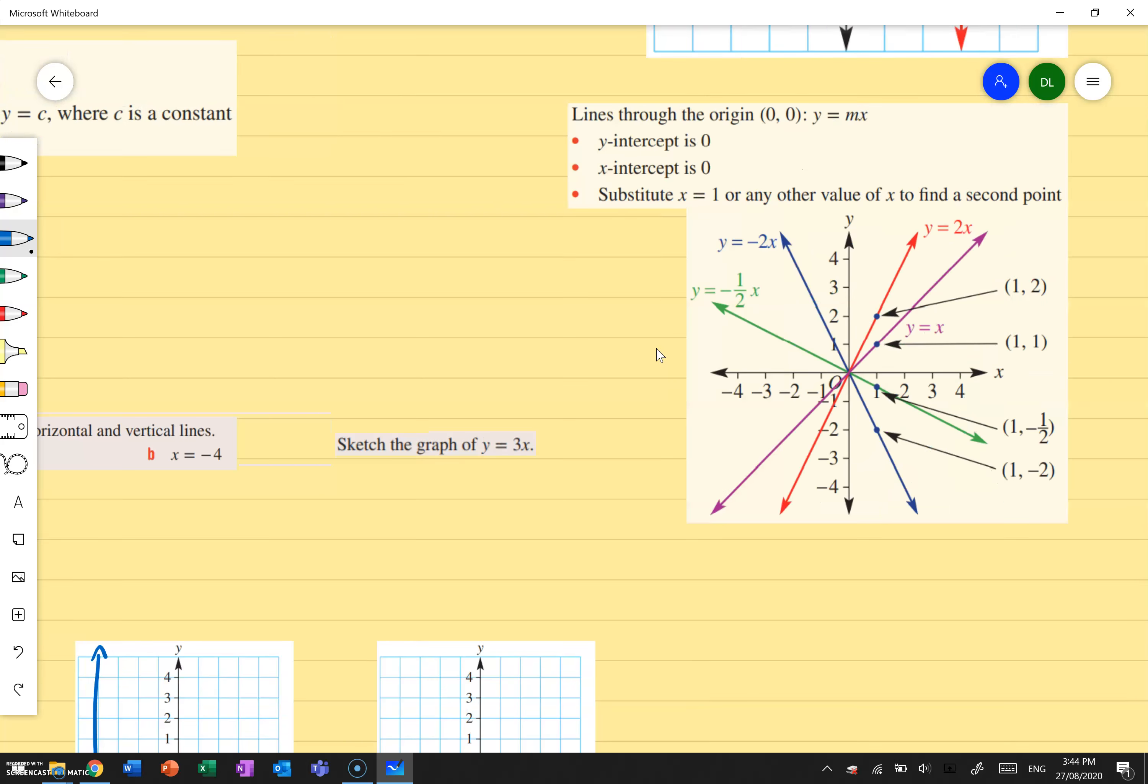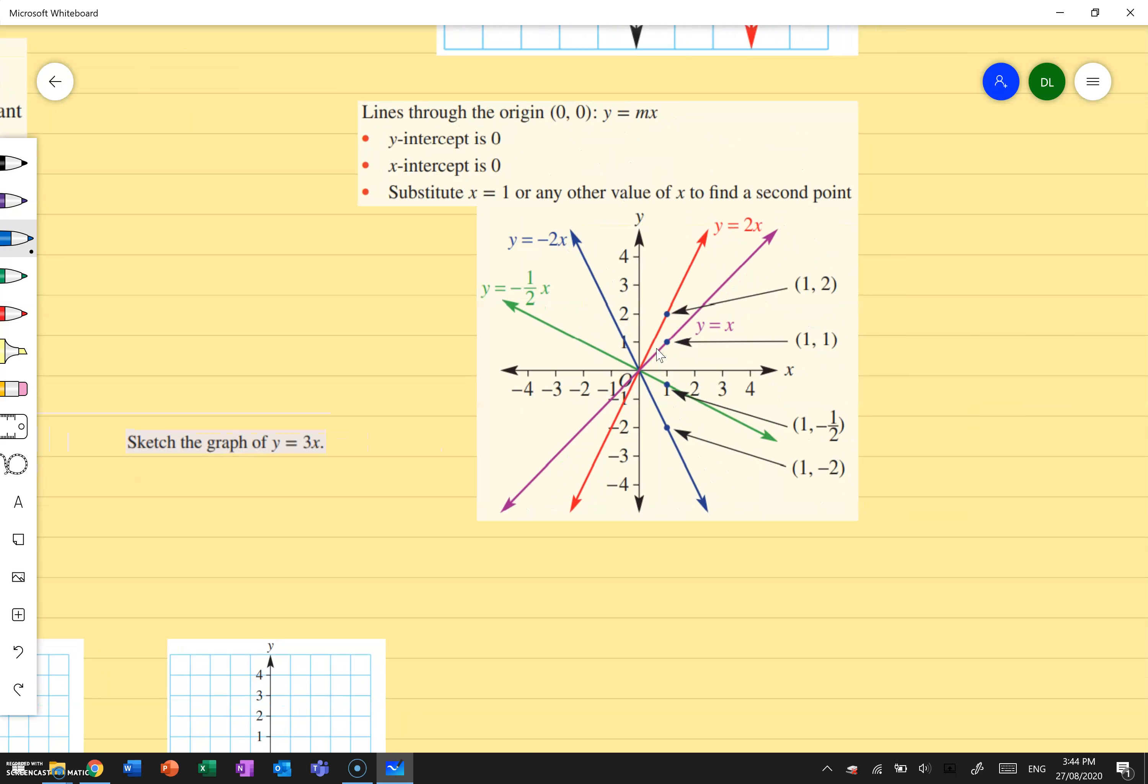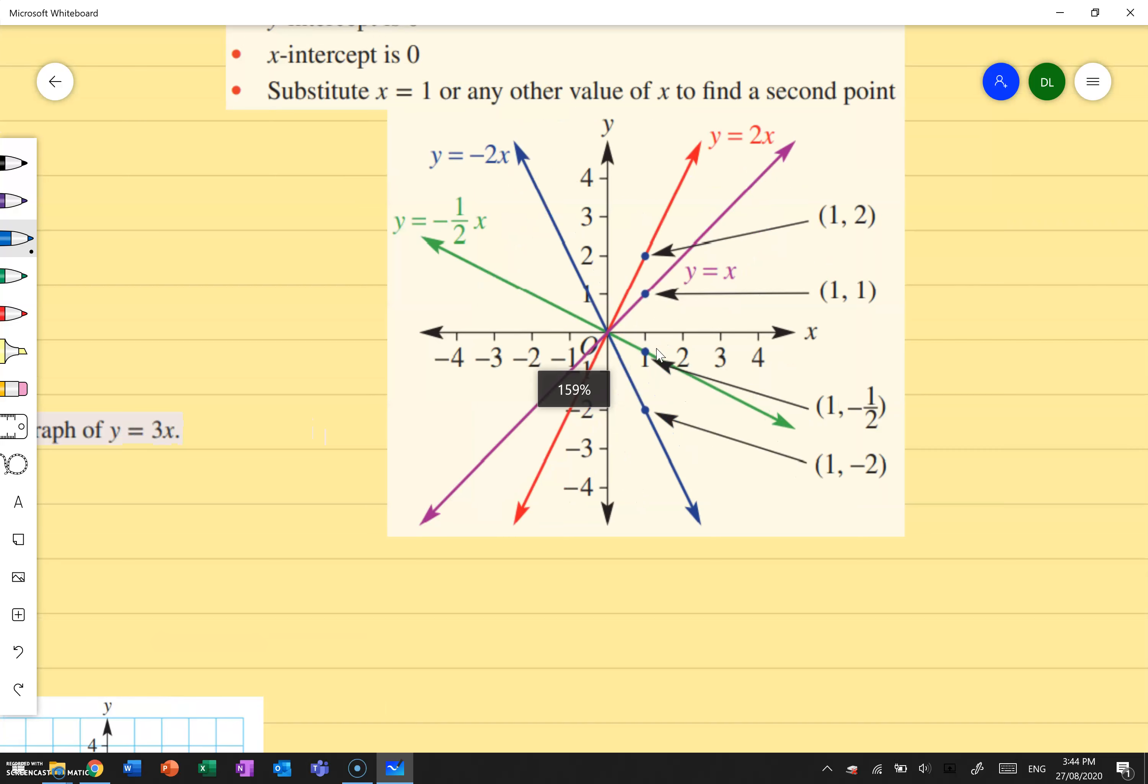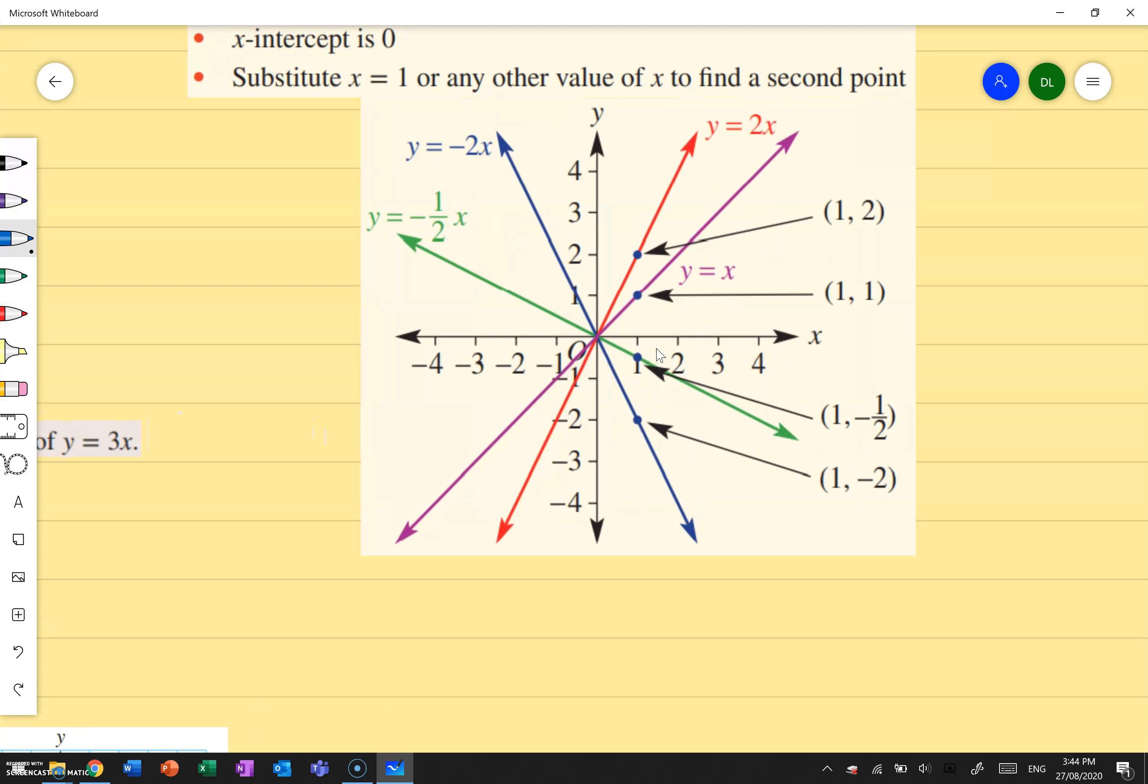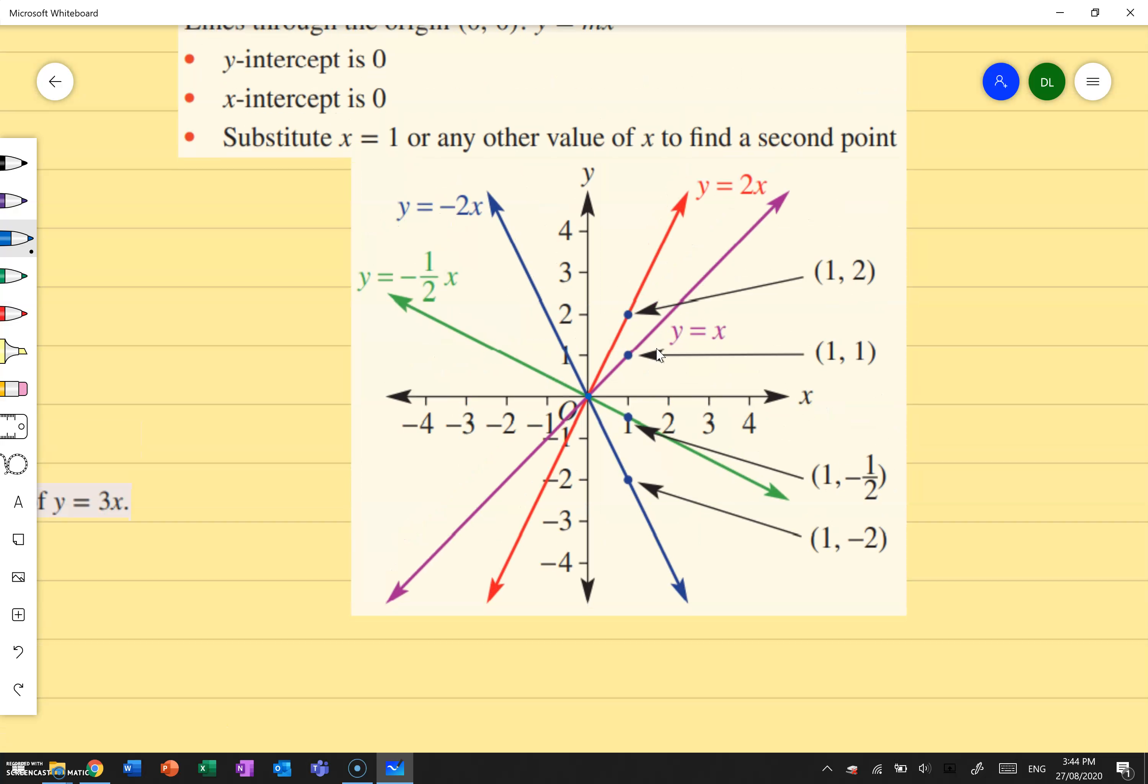Where it gets a little bit more difficult is when I have lines that pass through the origin. So over here I've got a bunch of lines, and it's important to know that every single one of these lines, the purple, red, green, blue, they all pass through the point zero zero which is once again our origin.